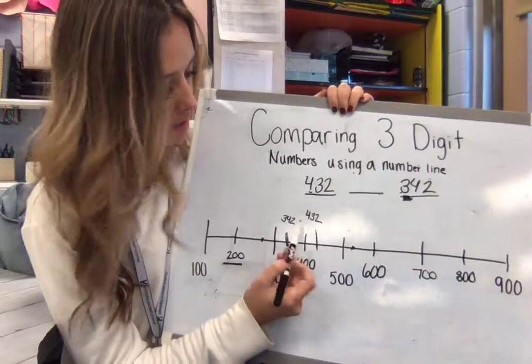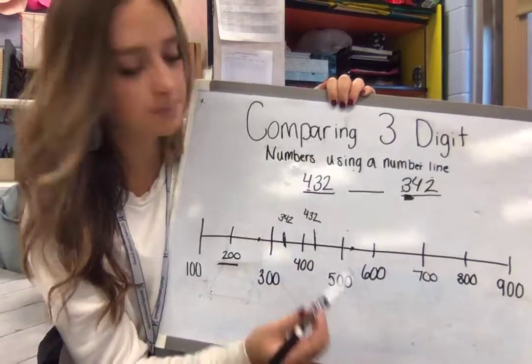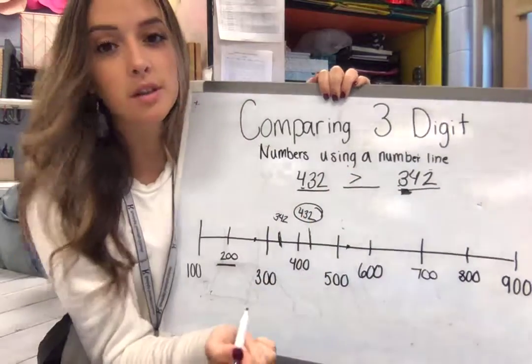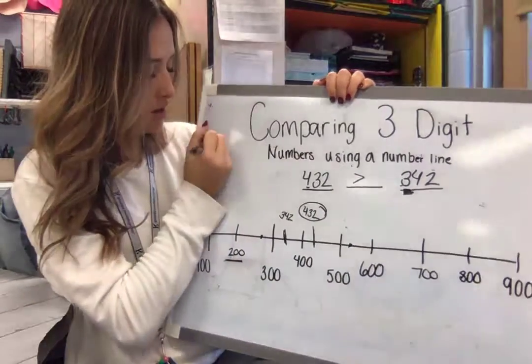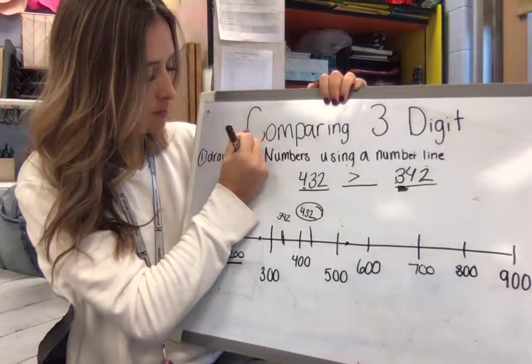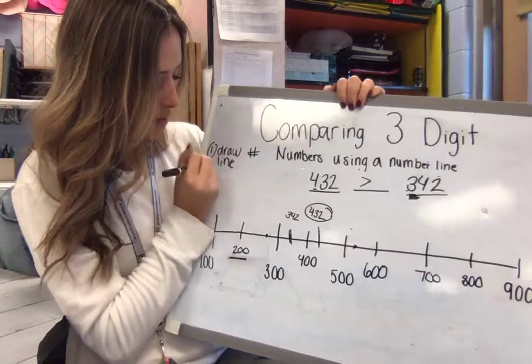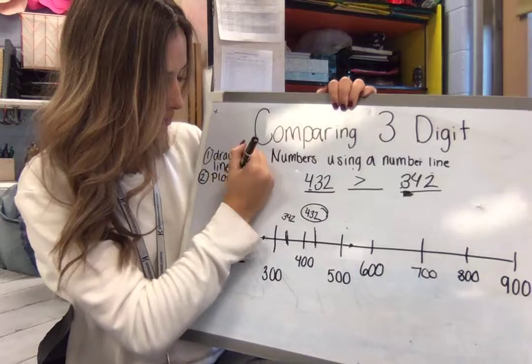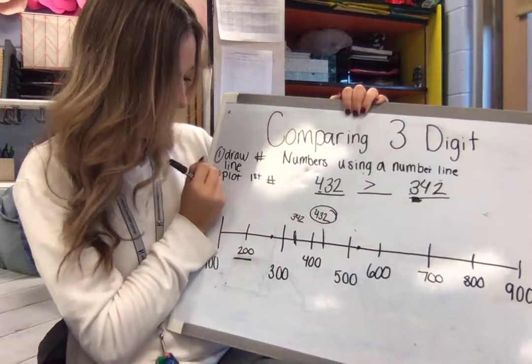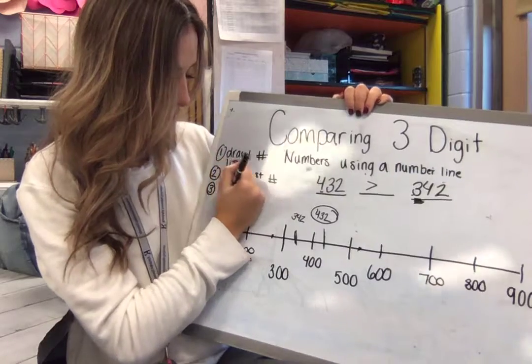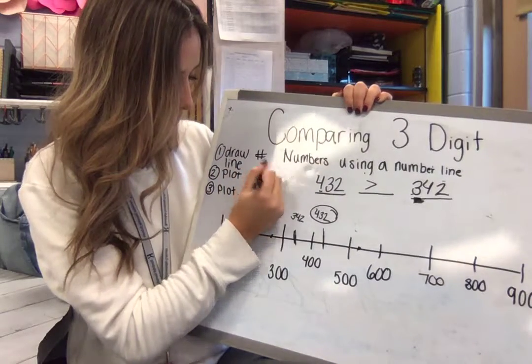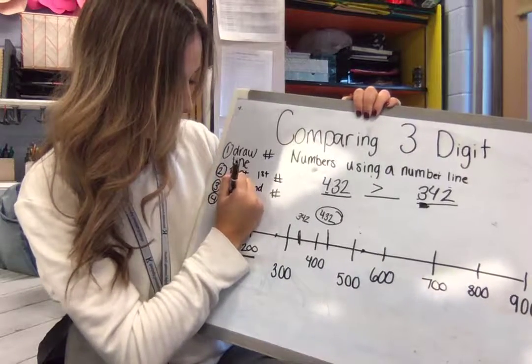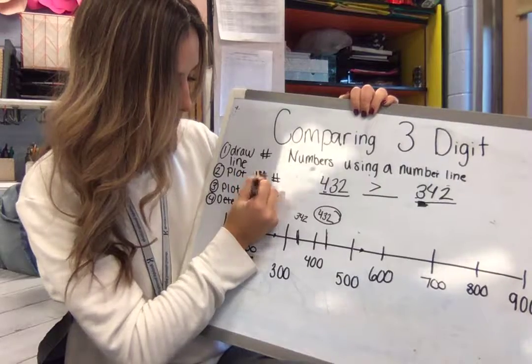Now, which one's bigger? Which one is farther along on our number line? That's right. 432. Okay. So, your first step today is to draw your number line. 1, and 2, plot your first number, and then 3, plot your second number. 4, determine which is greater.